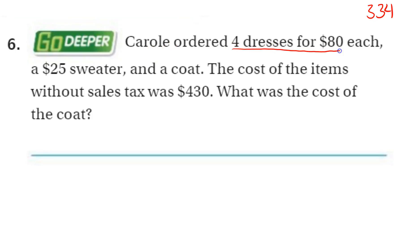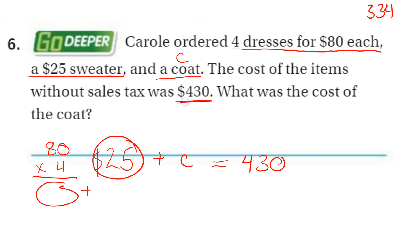Carol ordered four dresses for $80 each. So the dresses are $80 and she ordered four of them. A sweater for $25. So this plus this plus a coat, which we don't know how much the coat cost. But we know all of it cost $430. So the sweater was $25. A coat, we called that C because we don't know. And then the total was $430. They want to know what the cost of the coat is.